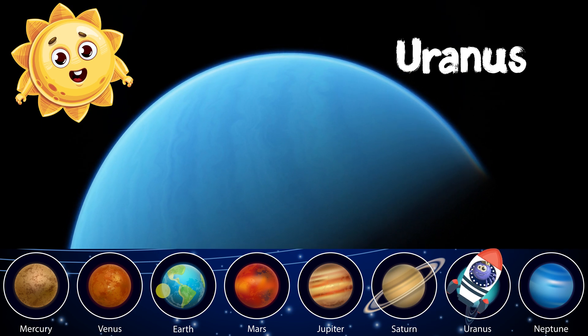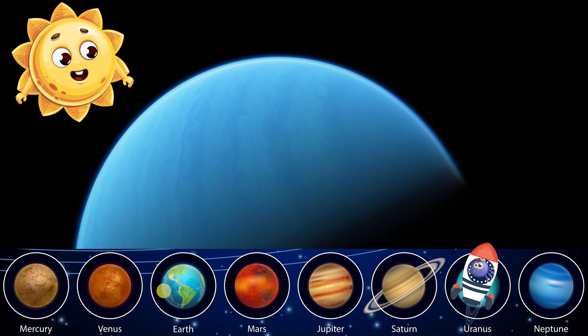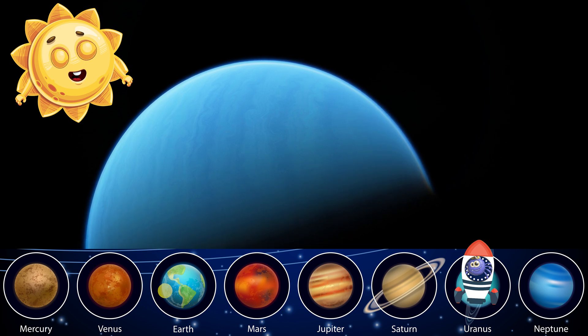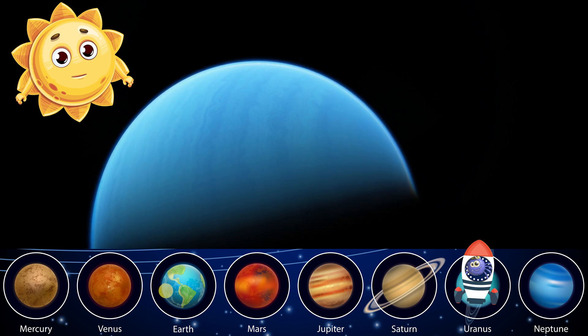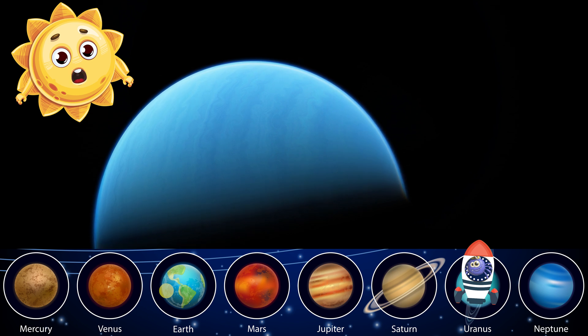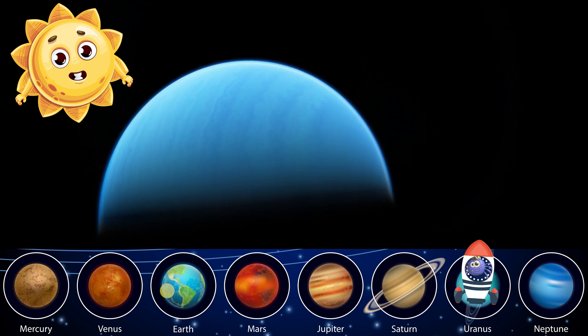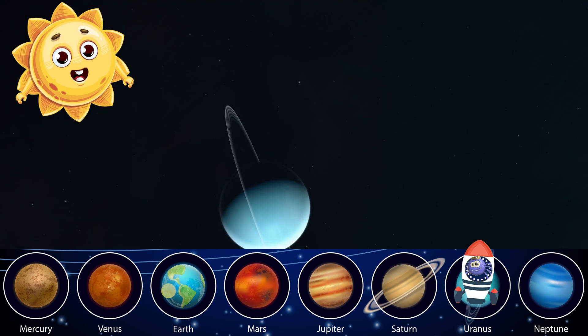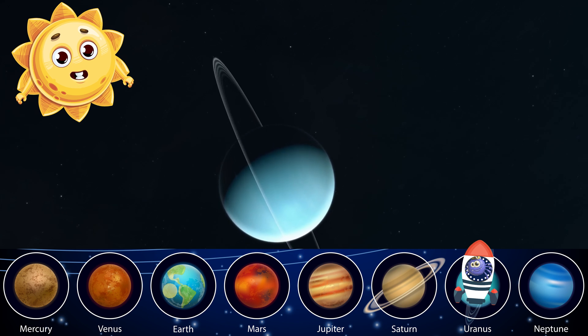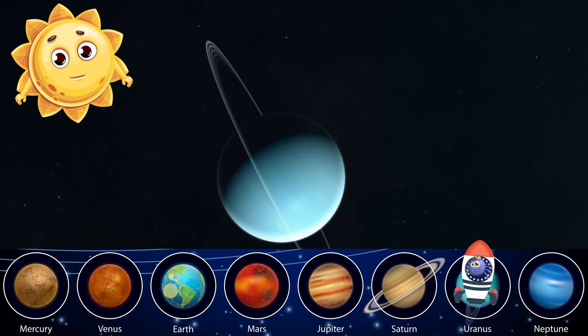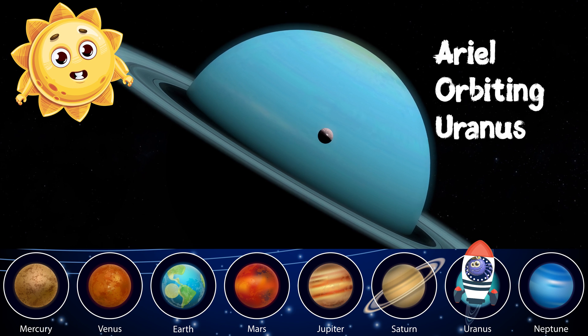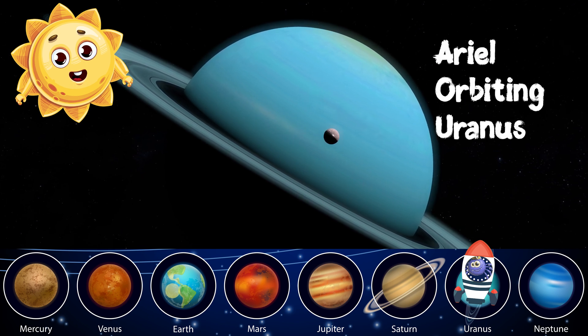Uranus is the seventh planet from me and the third largest one in our solar system. It has a thick atmosphere of hydrogen, helium, and methane that gives it a blue-green color. It also has a ring system made of dark particles that are hard to see. Uranus has at least 27 moons that orbit around it. The five largest are named Miranda, Ariel, Umbriel, Titania, and Oberon. Uranus is unique because it spins on its side. This means its poles are where most planets have their equators. Uranus takes about 84 years to orbit around me and about 17 hours to spin on its axis.